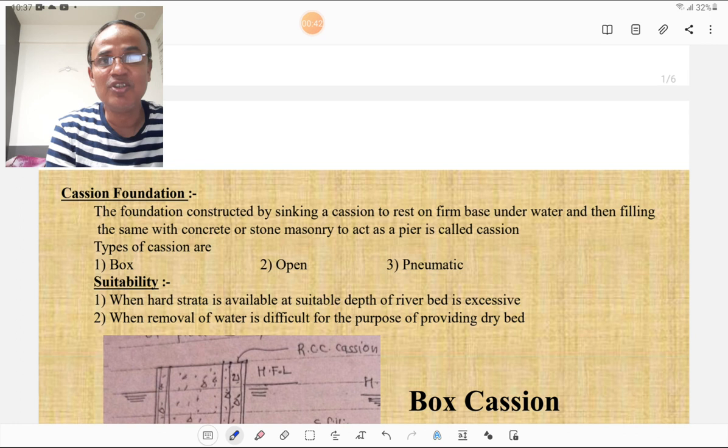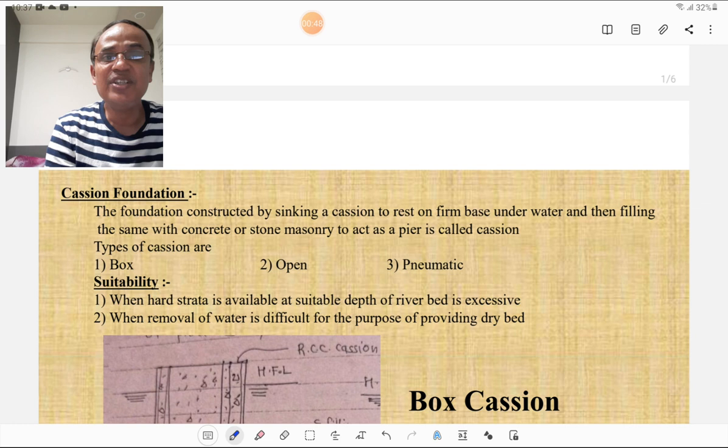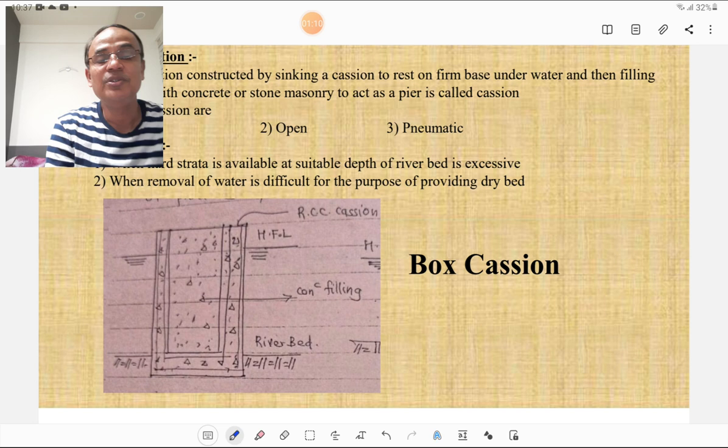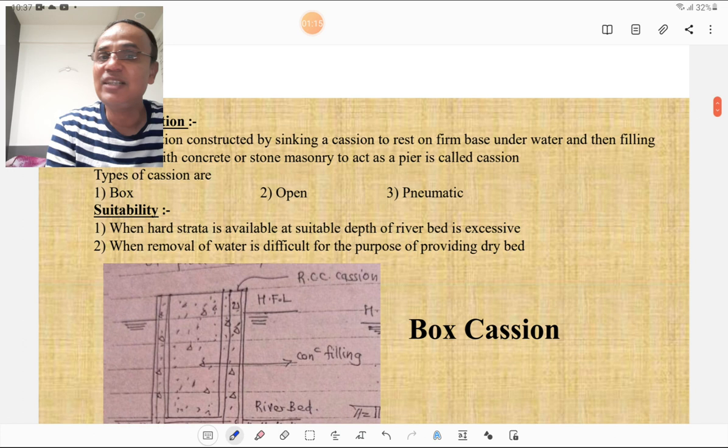First of all, we must know what is the caisson or caisson foundation. The foundation constructed by sinking caisson to rest on a firm base under water and filling the same with concrete or stone masonry to act as a pier is called as a caisson. The types of caissons are box caisson, open caisson, and pneumatic caisson.